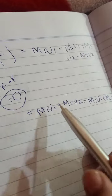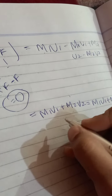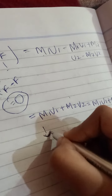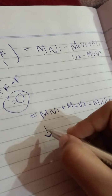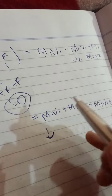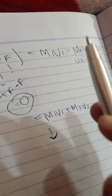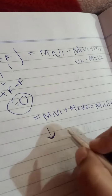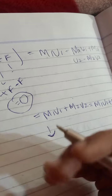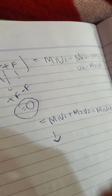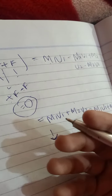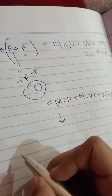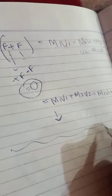This is the law of conservation of momentum equation. Here you can see the velocity changes but momentum remains the same. This law is followed in an isolated system as well as in an elastic system.